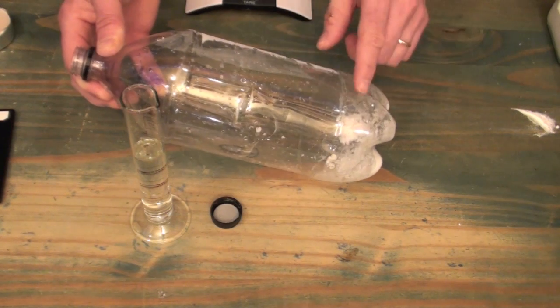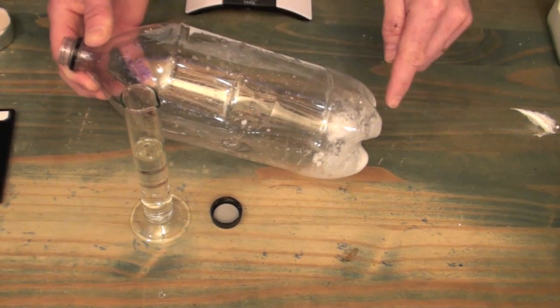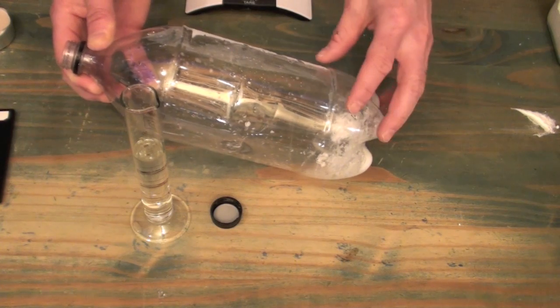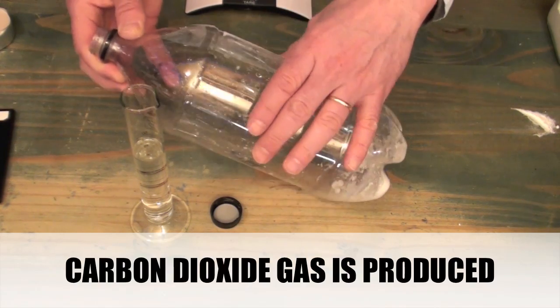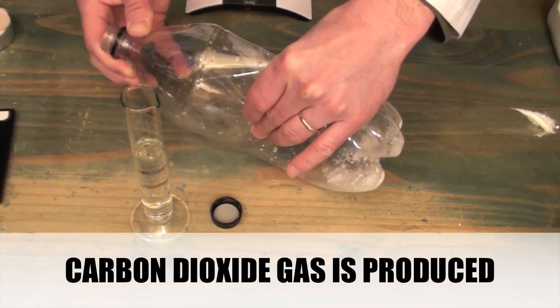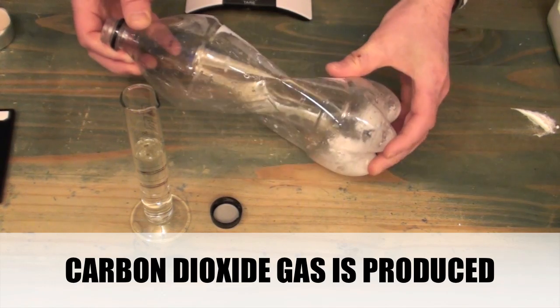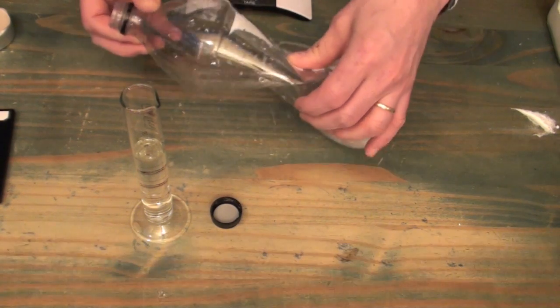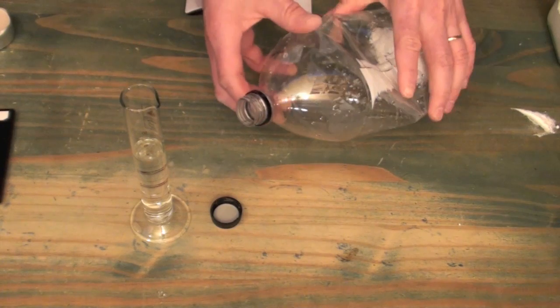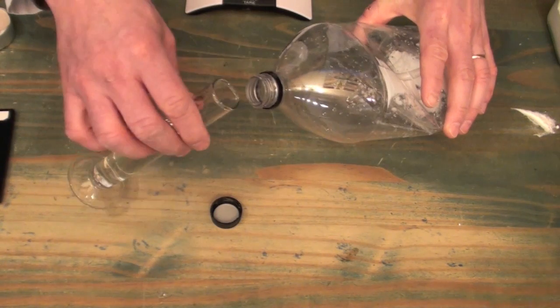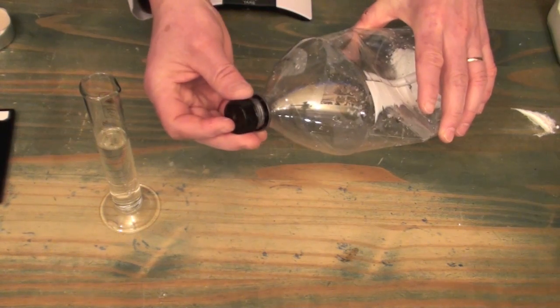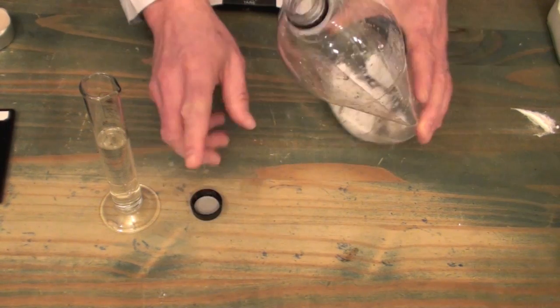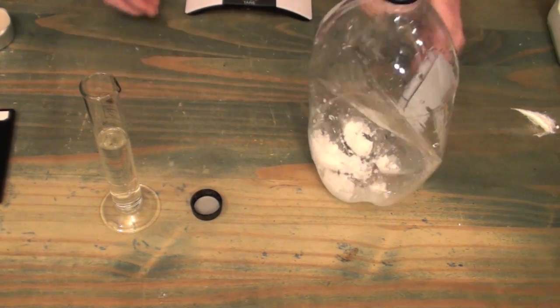So what we're going to do is add the vinegar to the baking soda and that's going to produce a violent reaction that produces carbon dioxide. So to prepare for that we're going to squeeze the bottle and that will make room for the production of gas. So then it's just a matter of adding the vinegar into the bottle and closing the cap very quickly so that no gas can escape during the chemical reaction.